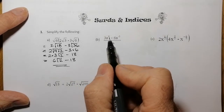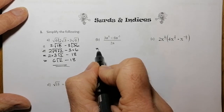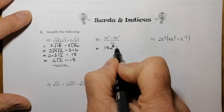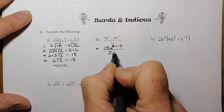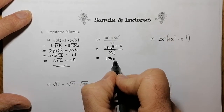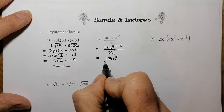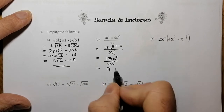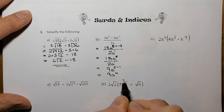Next, an indices question. I've got a fraction with indices on the top and the bottom. On the top: 3 times 6 gives me 18, and I've got a to the power of 8 plus negative 3. On the bottom I've got 2a, with a power of 1. So the top simplifies to 18a to the power of 5 (since 8 minus 3 is 5), and the bottom is 2a to the power of 1. Dividing gives 9a to the power of 4 — that's my final answer.